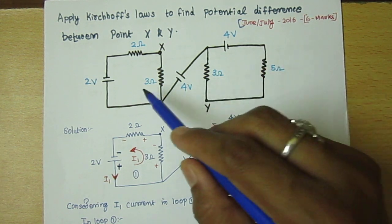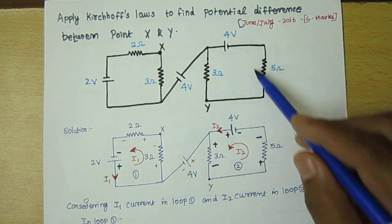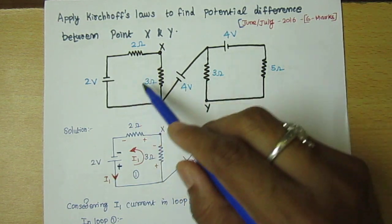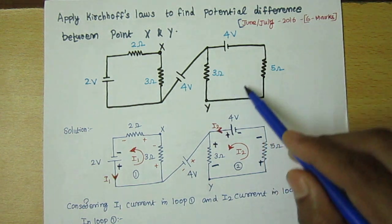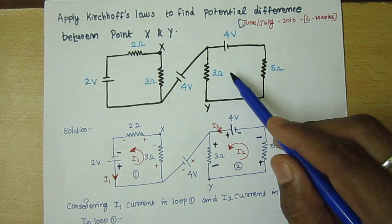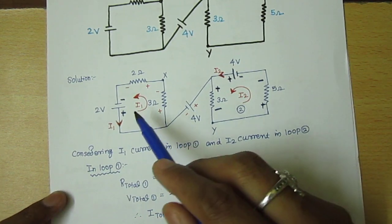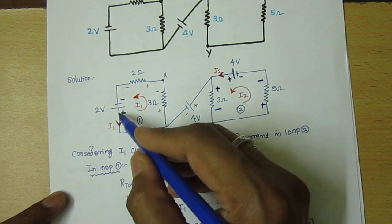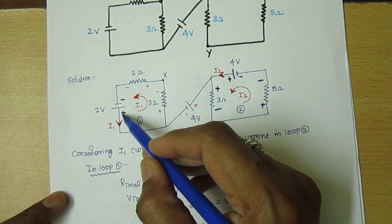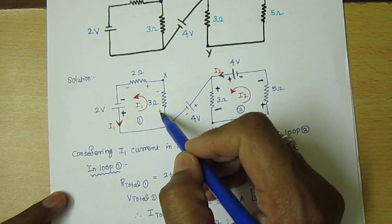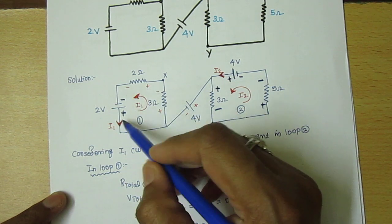I am considering this as loop 1 and this as loop 2. The current flowing in loop 1 is I1 and the current flowing in loop 2 is I2. Here, this is your battery which is given as 2 volt — this terminal is negative and this is positive. So positive, negative, positive, negative — like this I make loop 1.